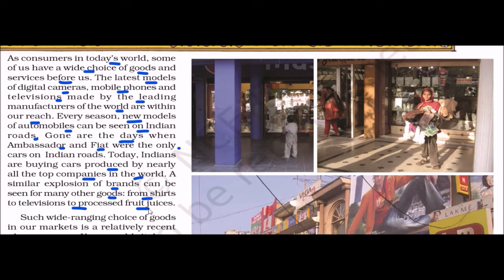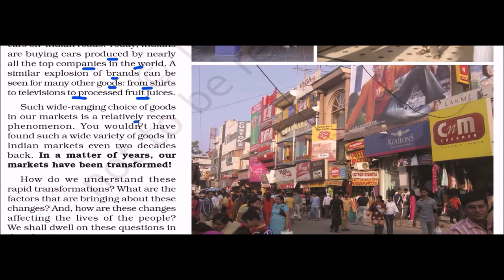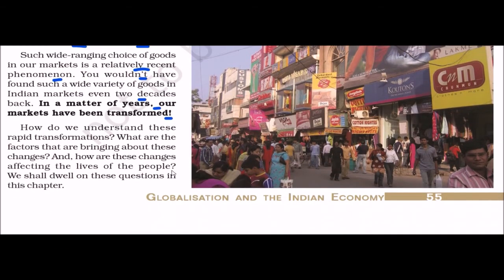Such a wide range of choices of goods makes our market a relatively recent phenomenon. You would not have found such variety even two decades ago. In a matter of years, our markets have been transformed. How do we understand this rapid transformation? What are the factors that bring about these changes, and how are these changes affecting the lives of people? We shall dwell on these topics in this chapter.